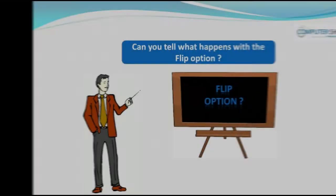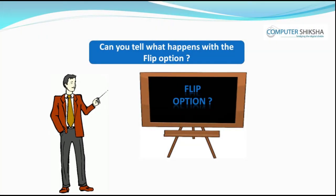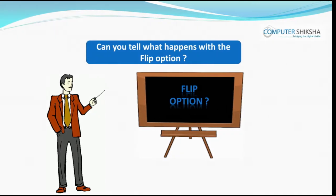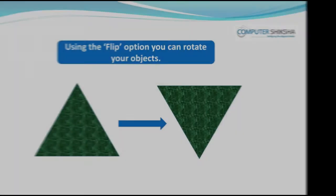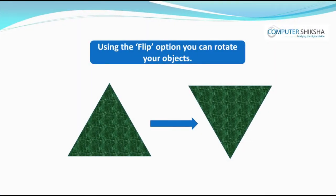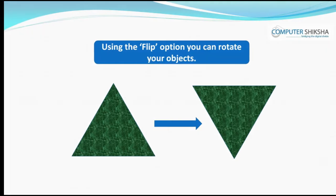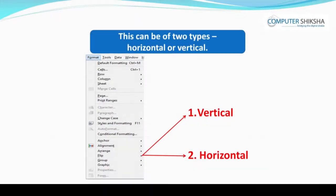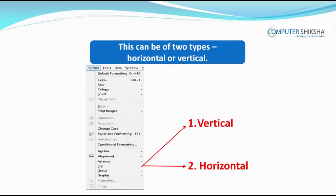Can you tell what happens with the flip option? Using the flip option, you can rotate your objects. This can be of two types: horizontal or vertical.